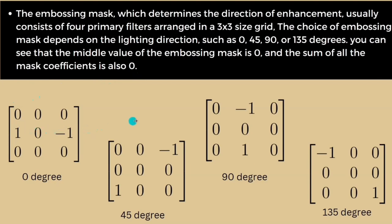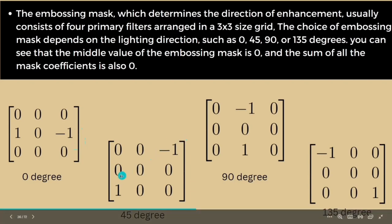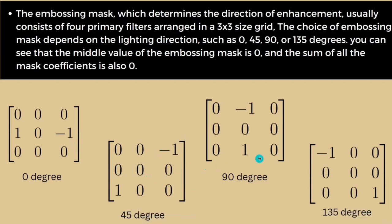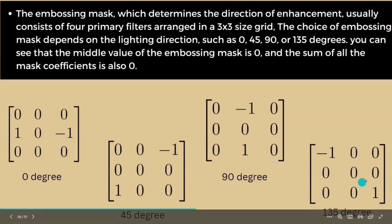The direction of the mask is determined by the plus one to minus one direction with respect to the x-axis. The zero degree mask goes from plus one to minus one with respect to x. Similarly, 45 degree, 90 degree, and 135 degree masks each have a distinct plus one to minus one orientation that you can observe on the slide.